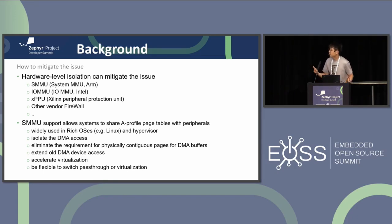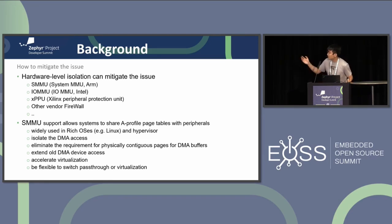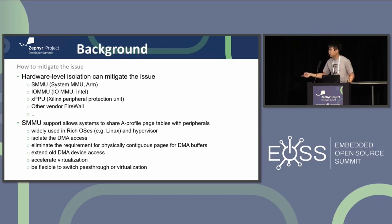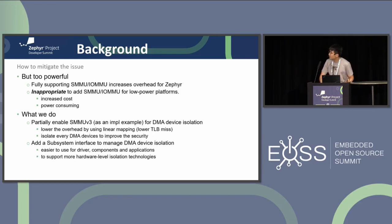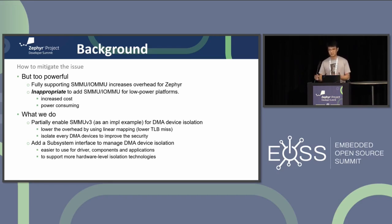To mitigate the issue, one solution is to leverage hardware level protection such as SMMU from ARM, IOMMU from Intel, and other similar technologies — all of which can restrict DMA devices. Taking SMMU as an example, SMMU allows the system to share page tables with DMA devices. It is very powerful and used in Linux and hypervisors. It can not only isolate DMA accesses but also eliminate the requirement for physically contiguous pages for DMA buffer allocation, and it can enhance virtualization capabilities. However, SMMU is too powerful for Zephyr.